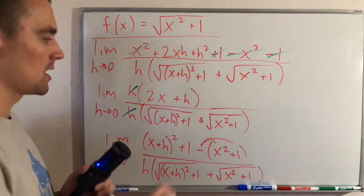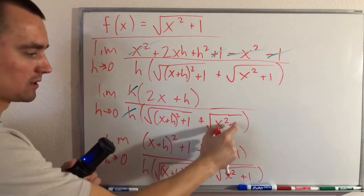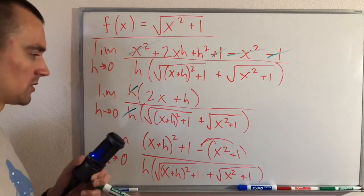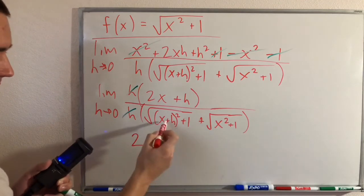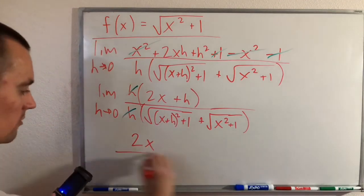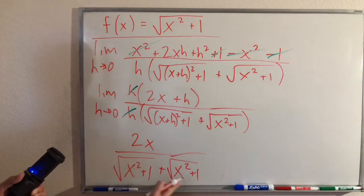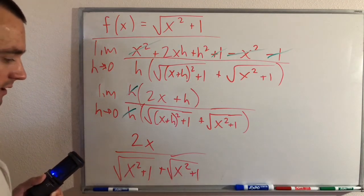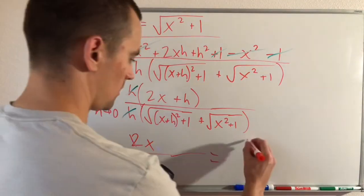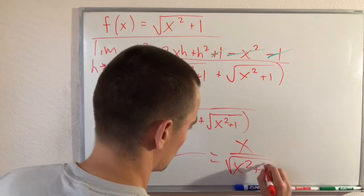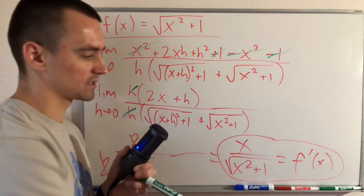After canceling h, putting 0 in for h gives 2x in the numerator. In the denominator, (x+0)² + 1 becomes x² + 1, so each square root becomes √(x² + 1). We then have √(x² + 1) + √(x² + 1) = 2√(x² + 1) in the denominator. The 2's cancel, leaving us with x / √(x² + 1) as our final answer, f′(x).